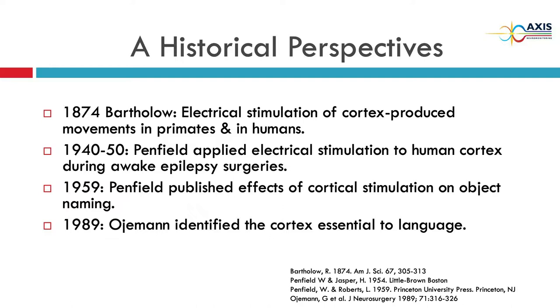Electric stimulation of the cortex dates back to 1874 — the stimulation of humans originates from the invention of electricity. When electricity was created, somebody touched it, got shocked, and that was the first neuromonitoring experience. Neuromonitoring has backed data going back about 200 years. In 1866, data was published showing that if you stimulate the brain of a monkey, it moves the hand on the other side. There were also studies in the late 1890s involving stimulation of the human brain, though one patient died after that.